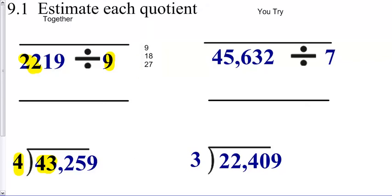So my two estimates are 1800 and 2700. So I divide by 9. 1800 divided by 9 is 200. Add my two zeros. 2700 divided by 9 is 300. Add my two zeros.